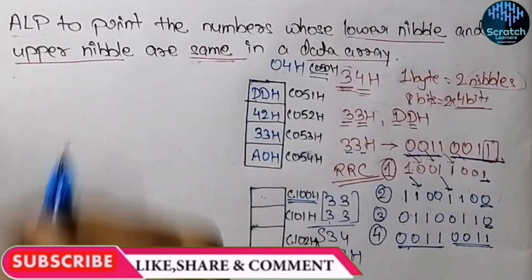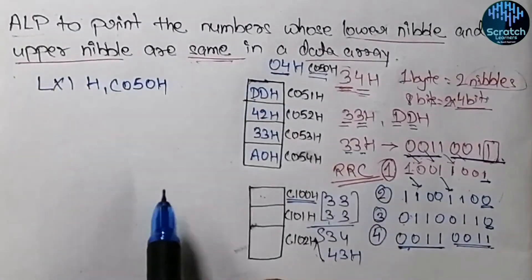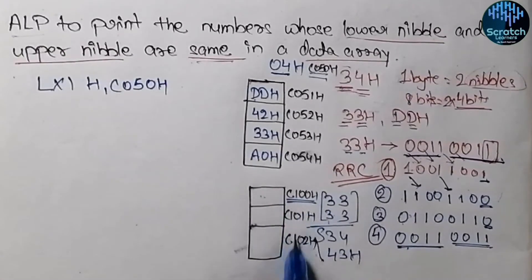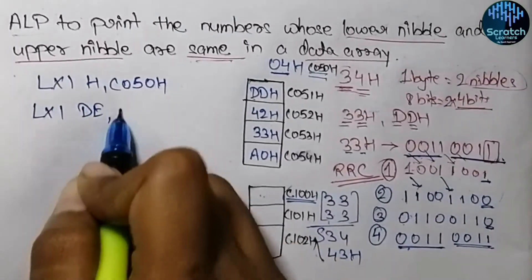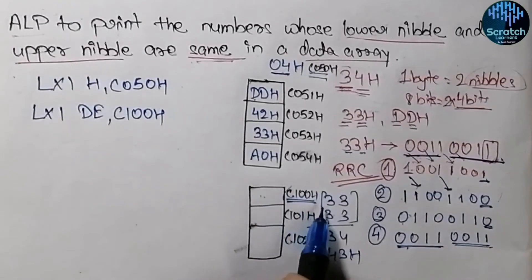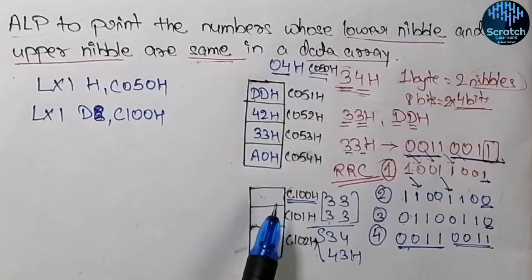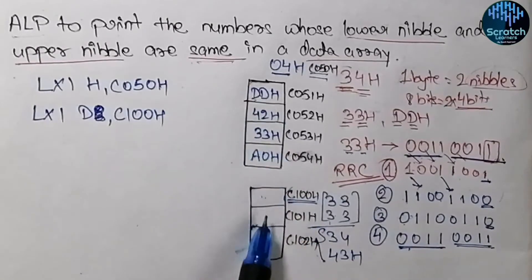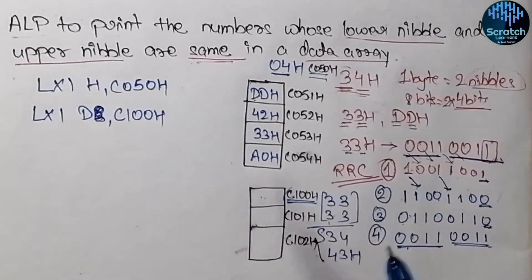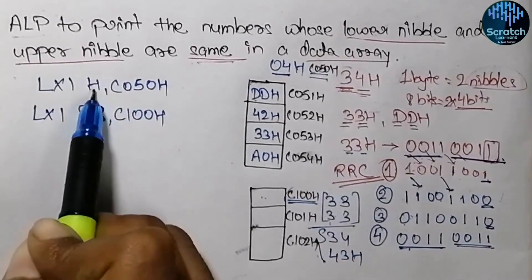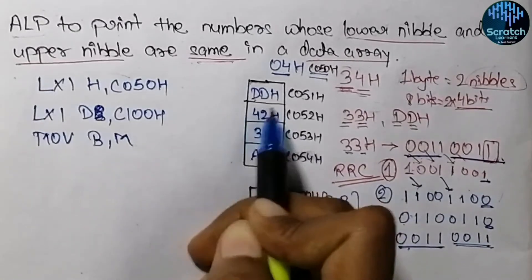Now let's look at the assembly language program. First, LXI H, C050 hex — we load the total number of elements (04 hex) from address C050 hex. We also initialize the DE register pair with C100 hex, the destination address where matching numbers will be stored. Then we move the count into register B so it can be tracked.